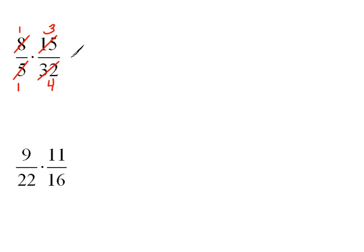So now I can multiply what I have left on top, which is 1 times 3, and that would be 3. And on bottom, in the denominator, I have 1 times 4, which would be 4. So my fraction in lowest terms would be 3 fourths.